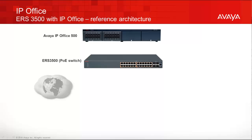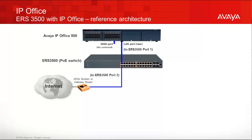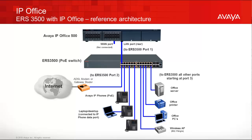The diagram shown here displays the standard port connectivity on the Ethernet Routing Switch 3500 when using the IP Office script. Port 1 on the ERS 3500 will connect to the IP Office. Port 2 will connect to the gateway router, while all other ports from port 3 onward will be used to connect to end user devices such as IP phones, desktops, printers, etc.